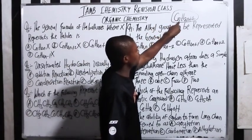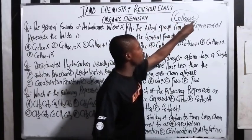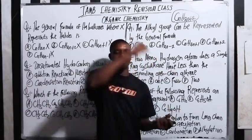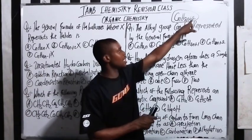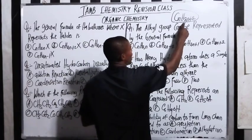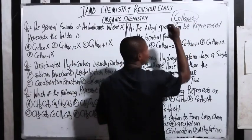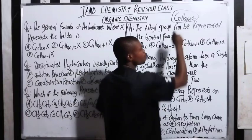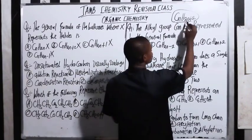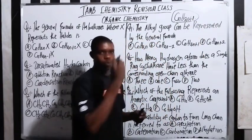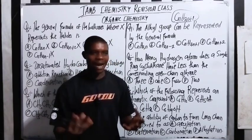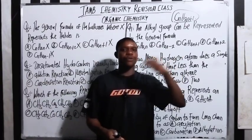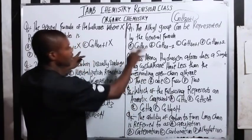Here, 'n' means the number of carbon atoms, and '2n+2' means the number of hydrogen atoms in the molecule. You get the alkyl group when you remove one hydrogen atom from the alkane. So if 2n+2 is the number of hydrogen atoms in the alkane, and you want to get the alkyl group, you remove one hydrogen — so 2n+2 minus 1 gives you CnH2n+1.